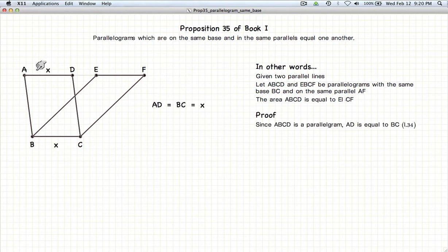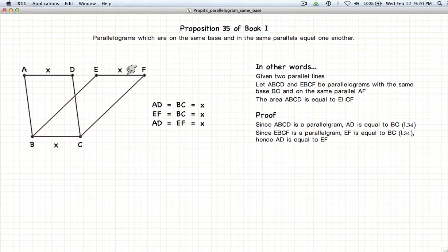So let's look at the line AD, which is going to be equal to the line BC, according to Proposition 34. And similarly, line EF will also be equal to line BC, according to Proposition 34.